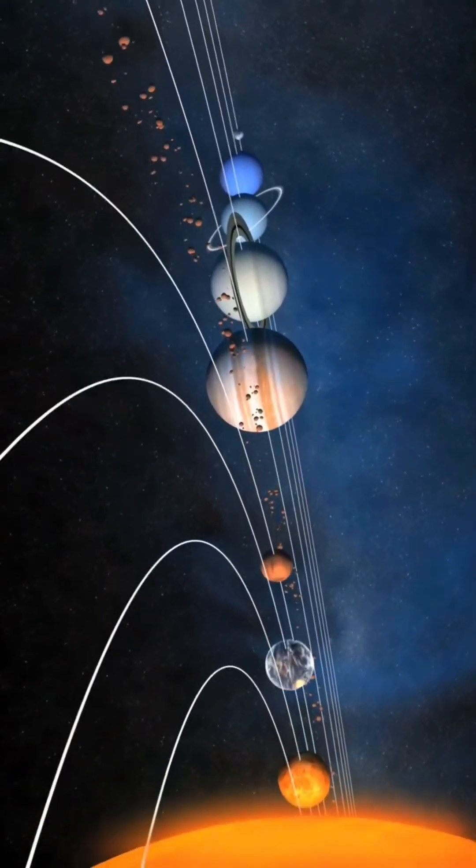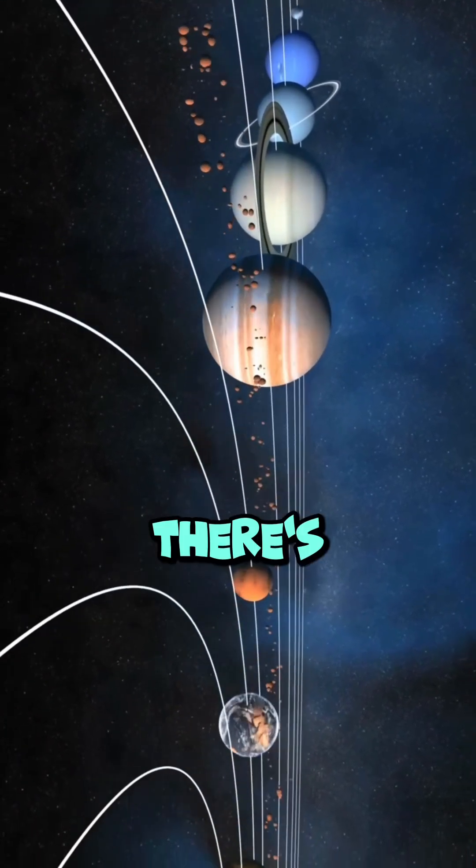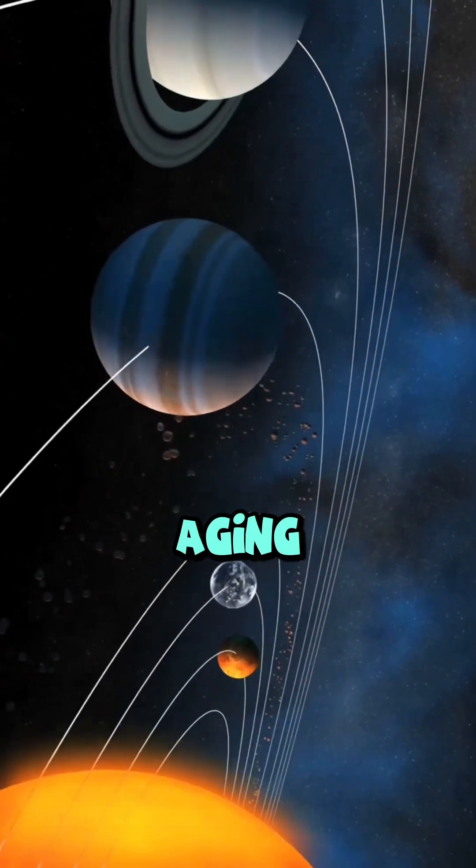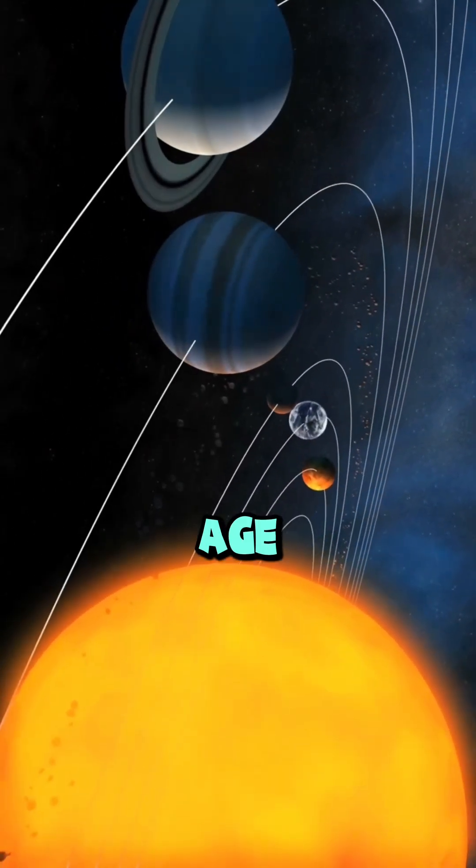Number six: a diamond planet. There's a planet made entirely of diamonds. Number seven: space slows aging. Astronauts age slower in space.